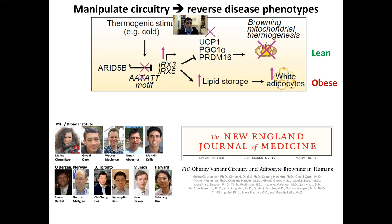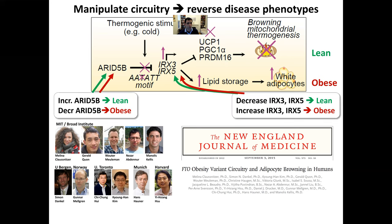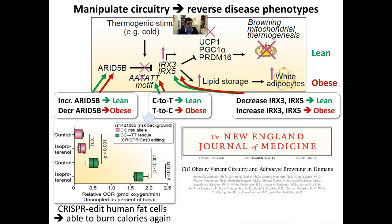The reason why we care about this circuitry is that we can now start manipulating it to reverse the disease phenotypes. We can actually start increasing or decreasing the expression of the upstream regulator or the downstream target genes. We can even use CRISPR-Cas9 genome editing to change the causal variant from C to T and T to C. And in each case, what we find is quite striking — we can shift back and forth between lean and obese phenotypes. Here's one example where changing just one SNP out of 3.2 billion in the human genome, we can restore thermogenesis and the burning of calories for risk individuals and bring them back to physiologically normal levels.